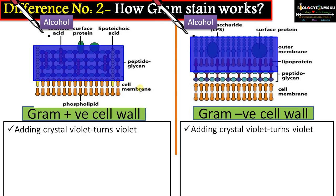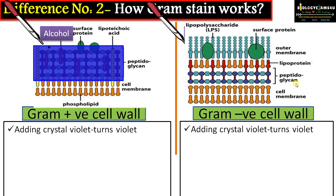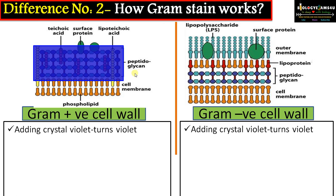The third and most important step is the addition of alcohol. On adding alcohol, gram positive bacteria retains the color of crystal violet — that is why it is called gram positive. Whereas gram negative bacteria loses the color of crystal violet. To visualize gram negative bacteria, we need to counter stain it with safranin. After alcohol treatment, gram positive retains crystal violet while gram negative loses it, and the next step is counter staining with safranin.